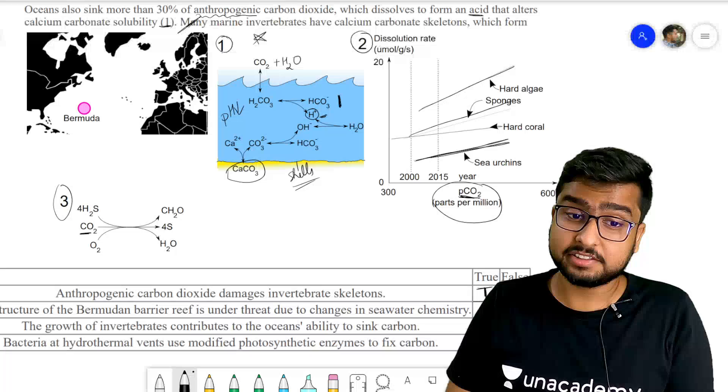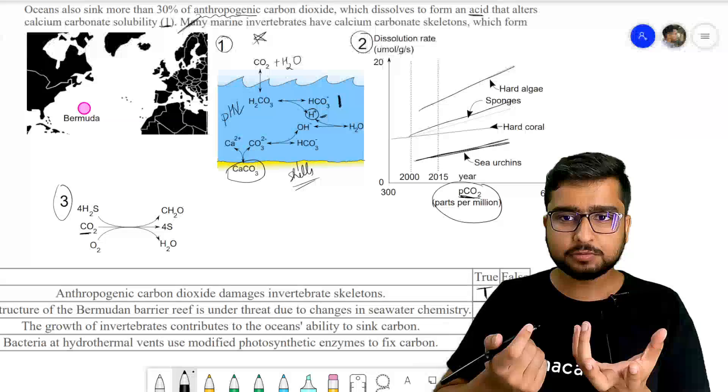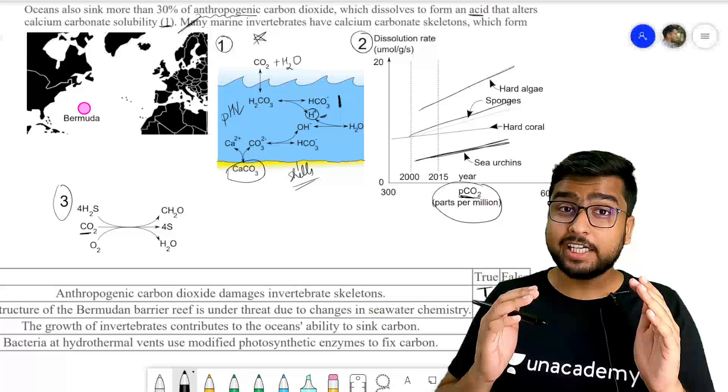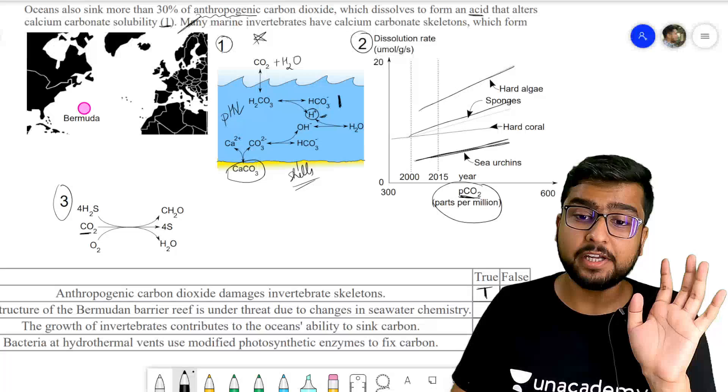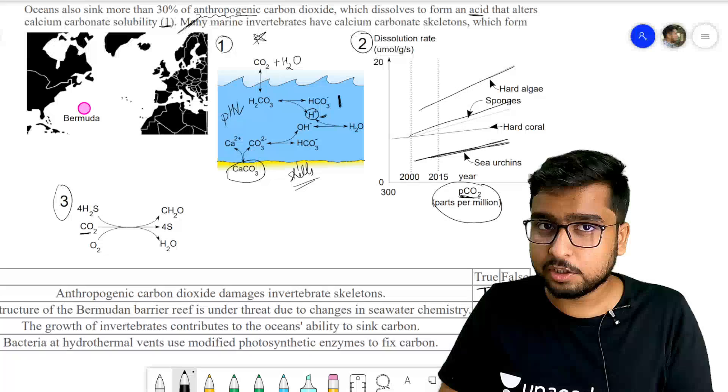Second, the structure of Bermudan barrier reef is under threat due to changes in seawater chemistry. Guys, you have to understand one thing. A reef is a submerged land body jisme aapke invertebrates live. It is not that the physical nature of the reef will change. Aisa nahi hai ki physical nature of reef change ho jayega, but yes the biological nature of reef is going to change. Why? Kyunki unmein jo aapke species rahte the wo change ho raha hai. So we can say that this is not entirely true.